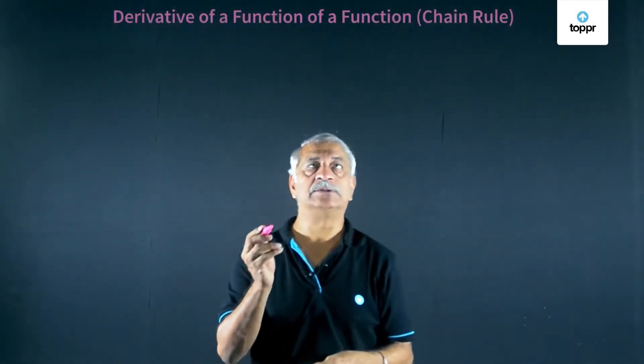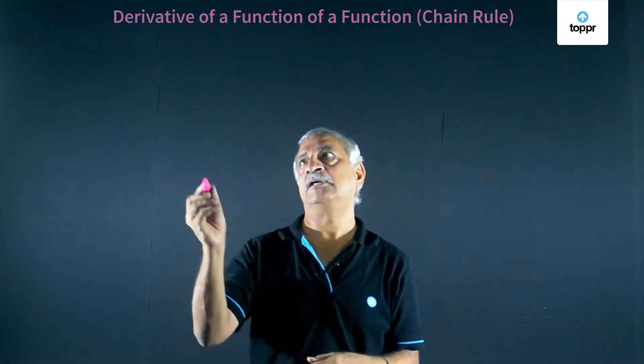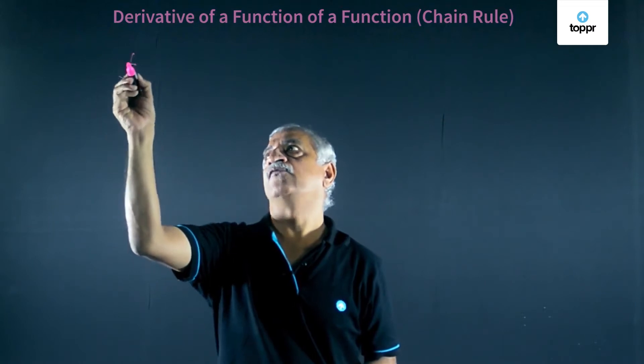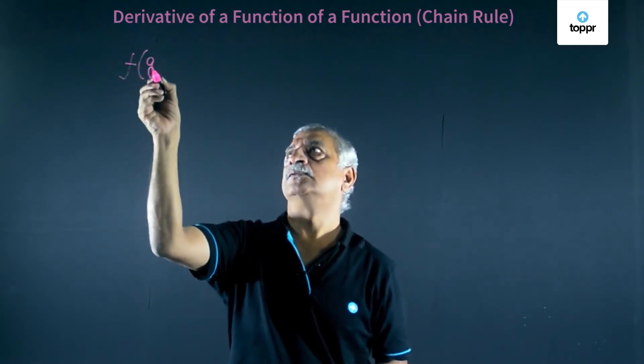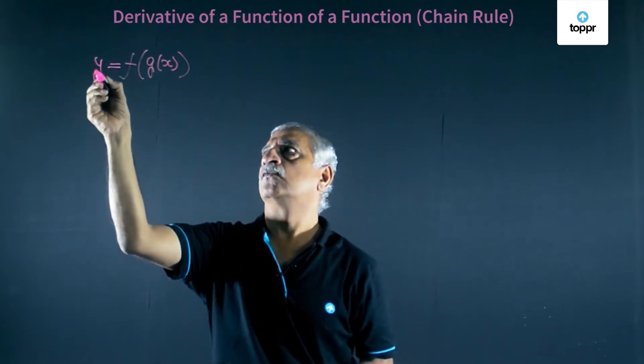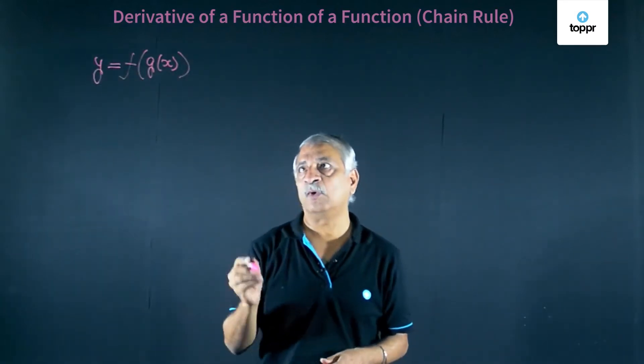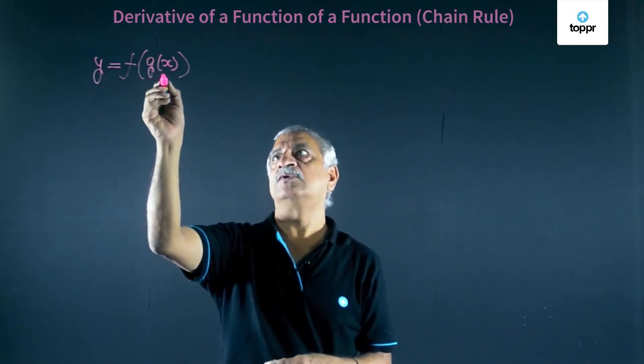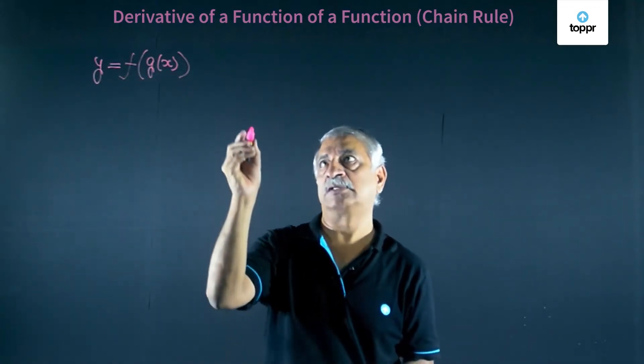Derivative of a function of a function, which is also defined as the chain rule. We consider f of g of x, say this is equal to y. We want to find out the derivative of function f which is a function of g of x.